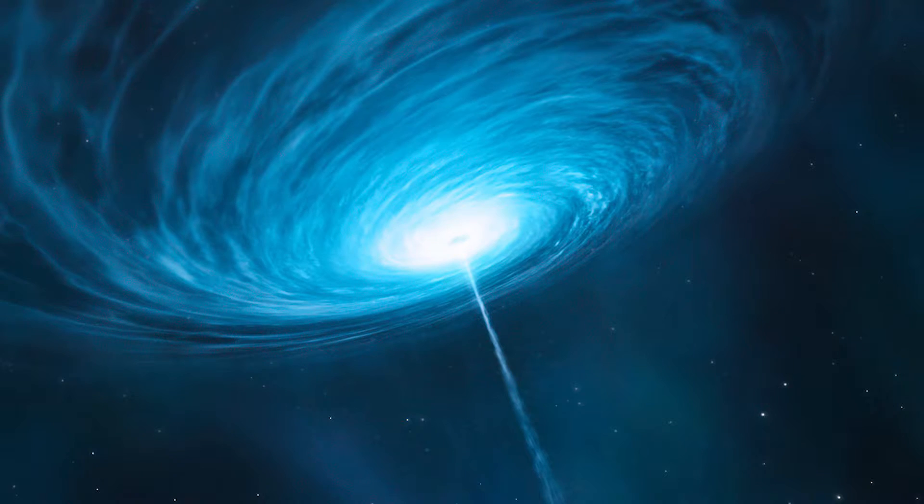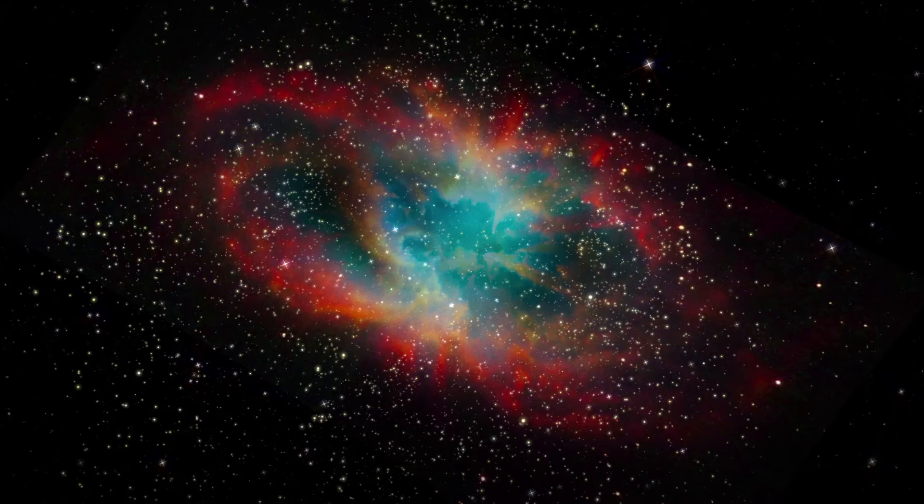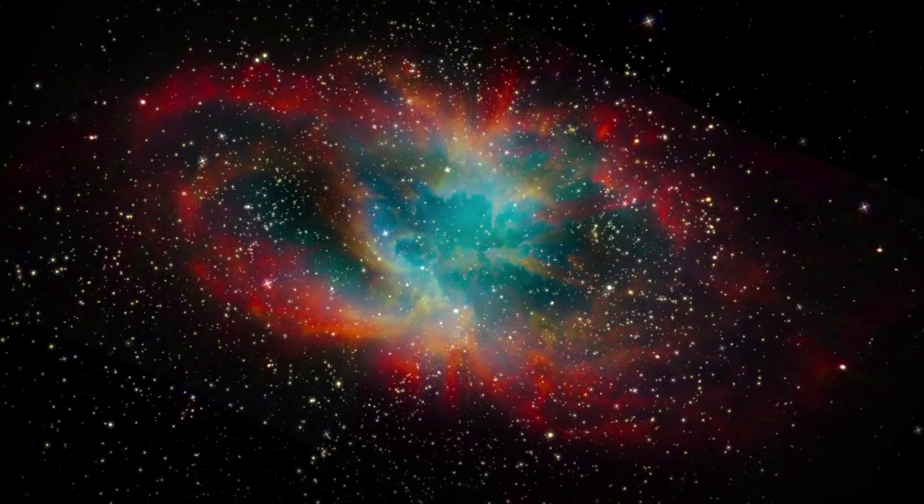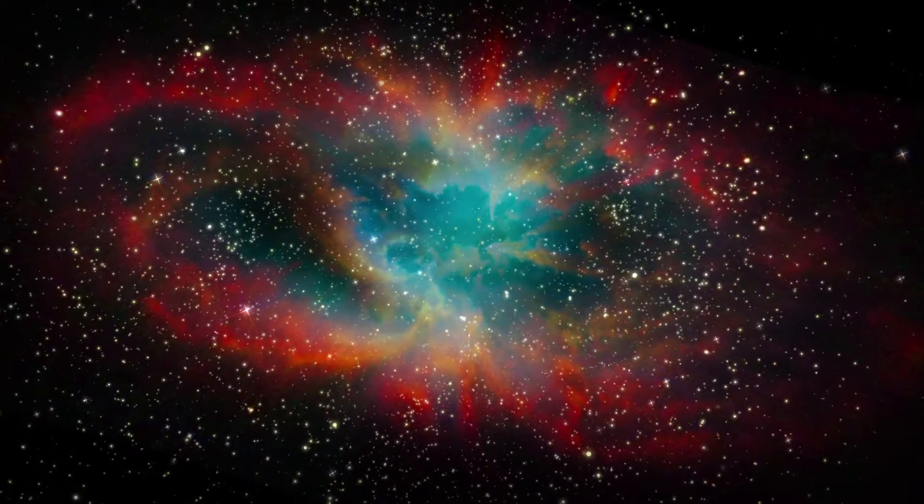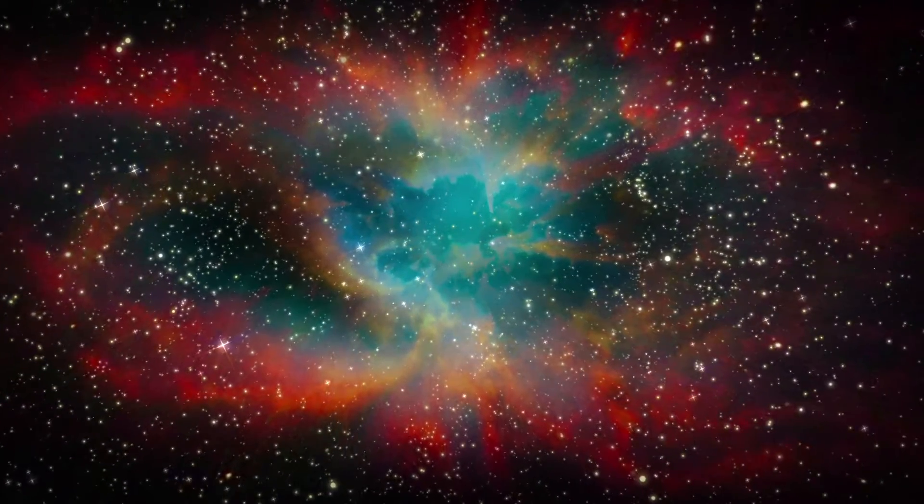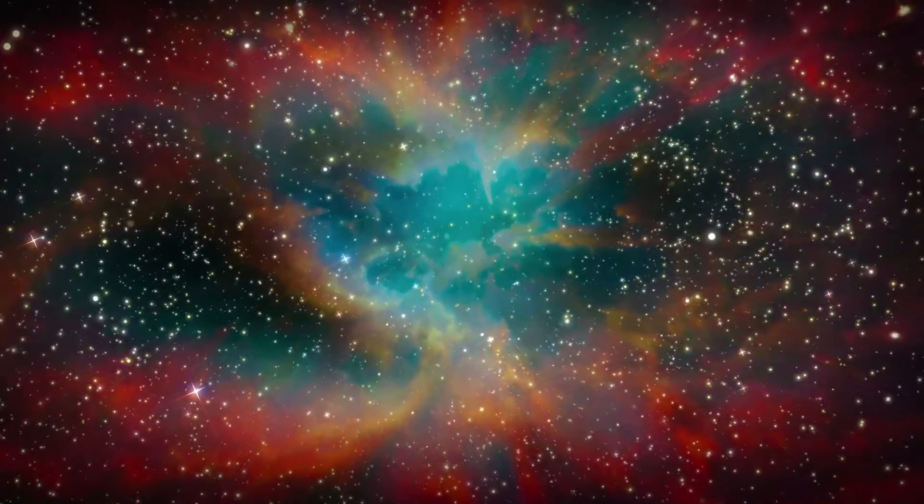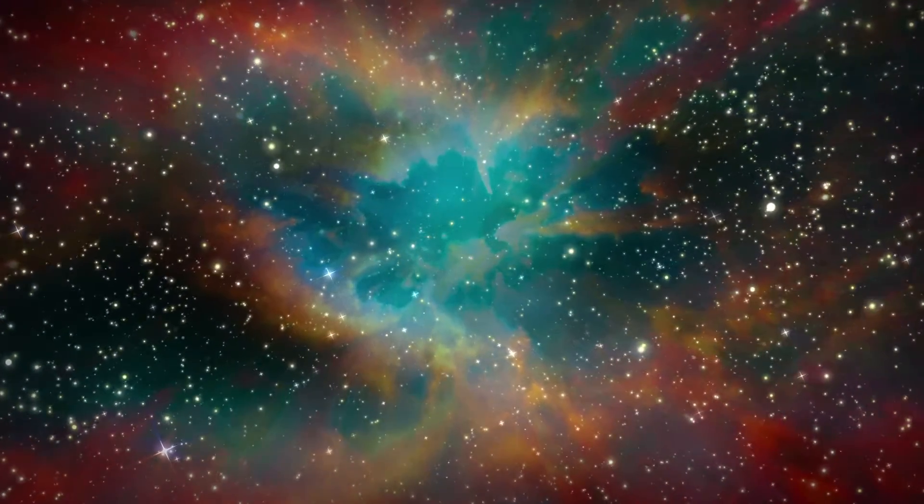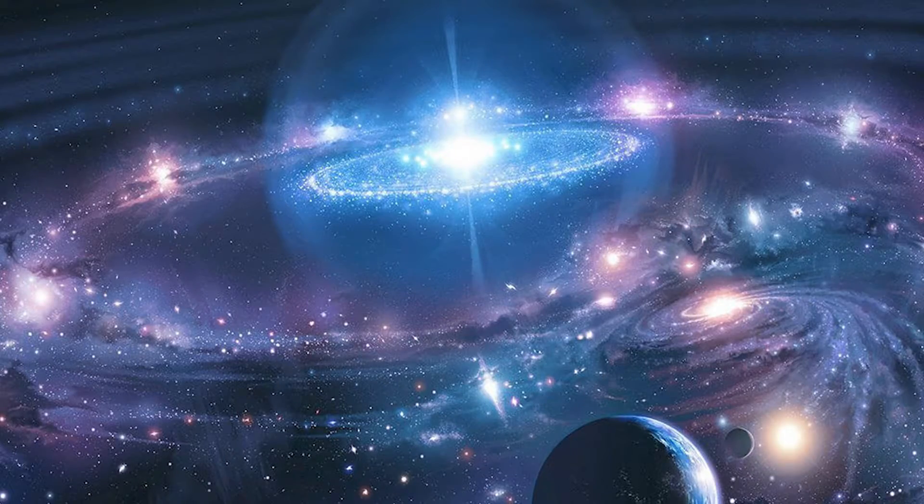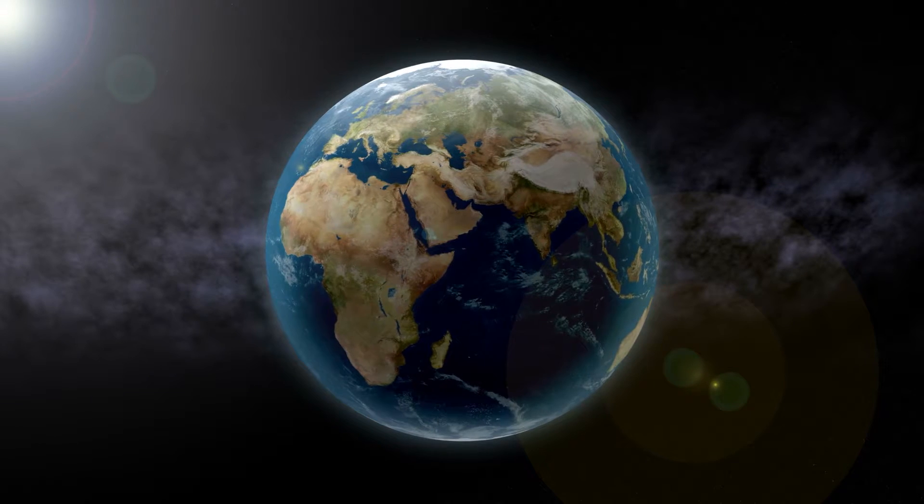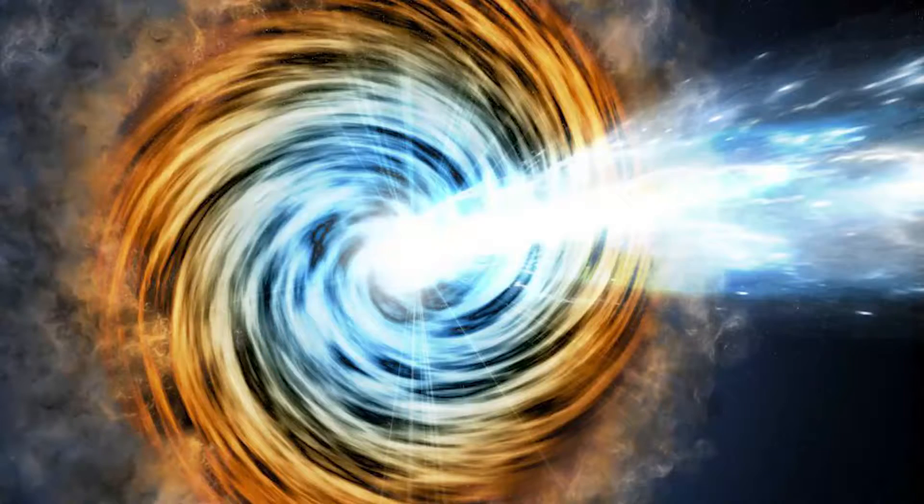These quasars shoot energy in certain directions, also known as their jets. In a universe containing hundreds of billions of galaxies, most of which had active nuclei billions of years ago but only seen today, it is statistically certain that thousands of energy jets should be pointed toward the Earth. Such quasars are called blazars.